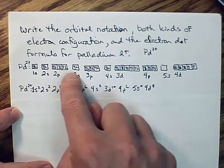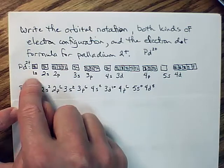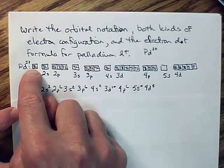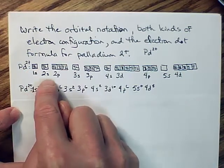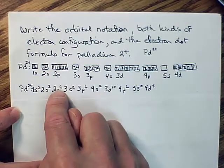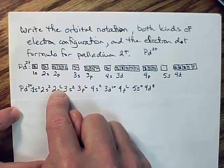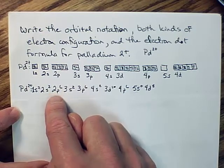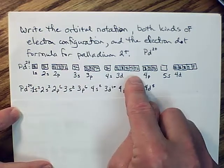So, this is the same, basically, as that. The only difference is, instead of putting two arrows here, we're counting those two electrons. Instead of putting these six arrows in three boxes here, we're counting them here. So, electron configurations are just sort of a shorter version of the orbital notation.